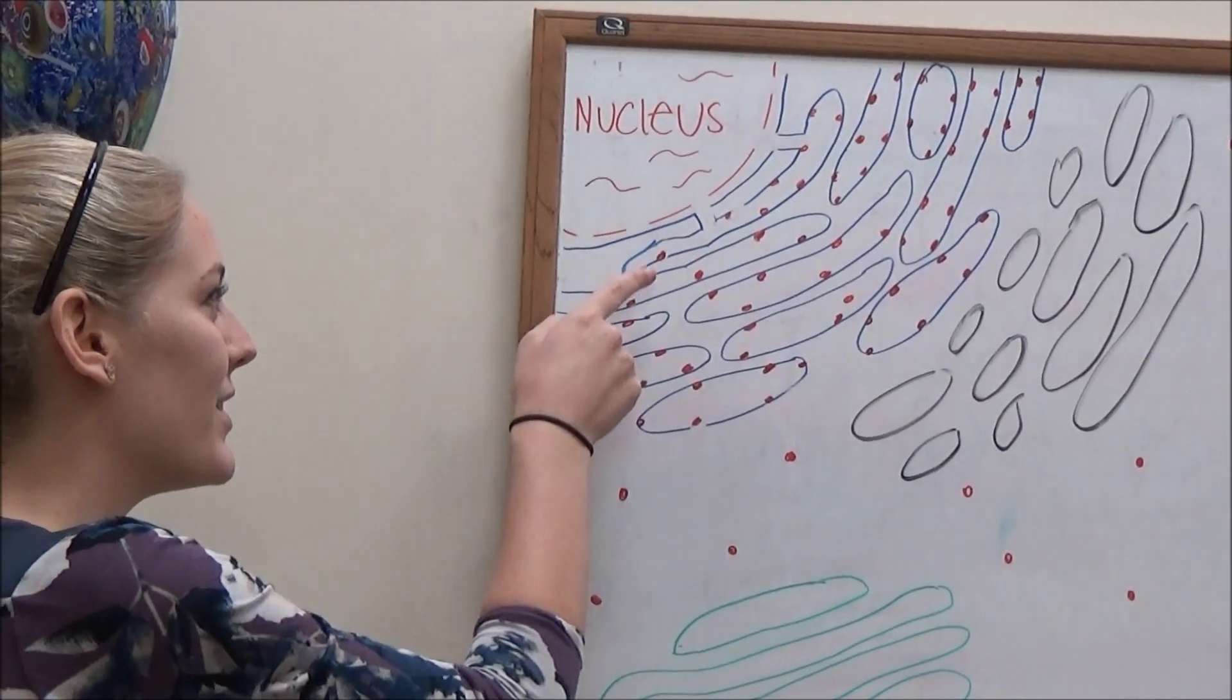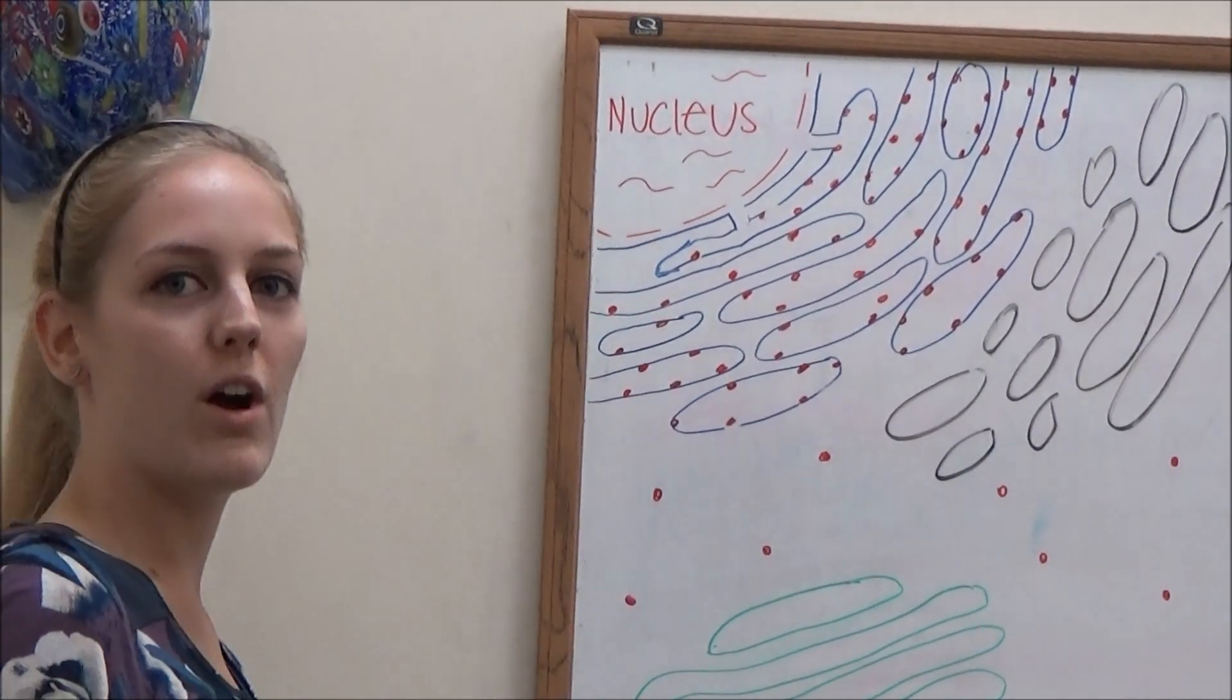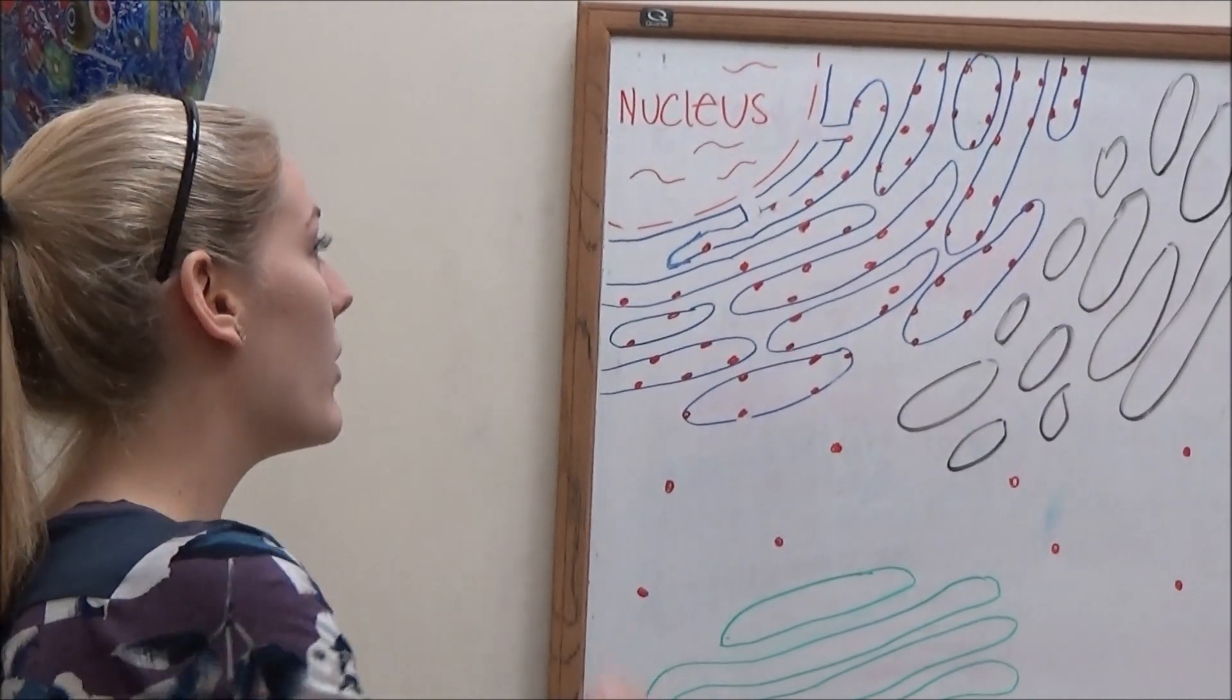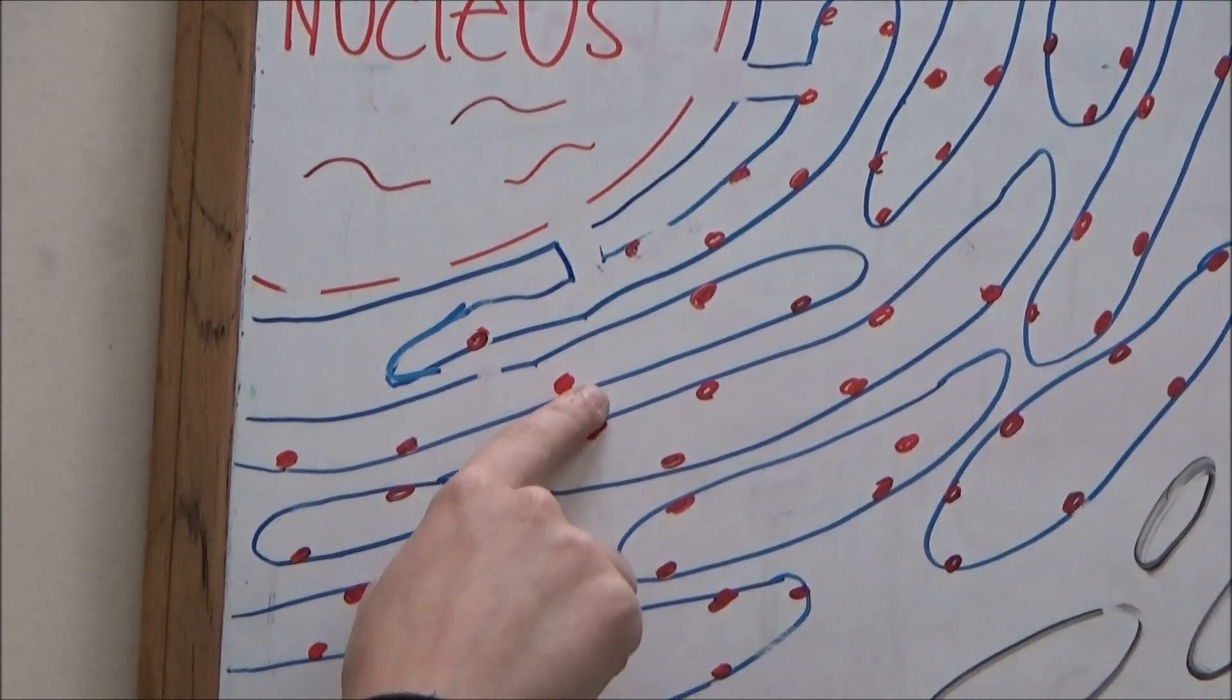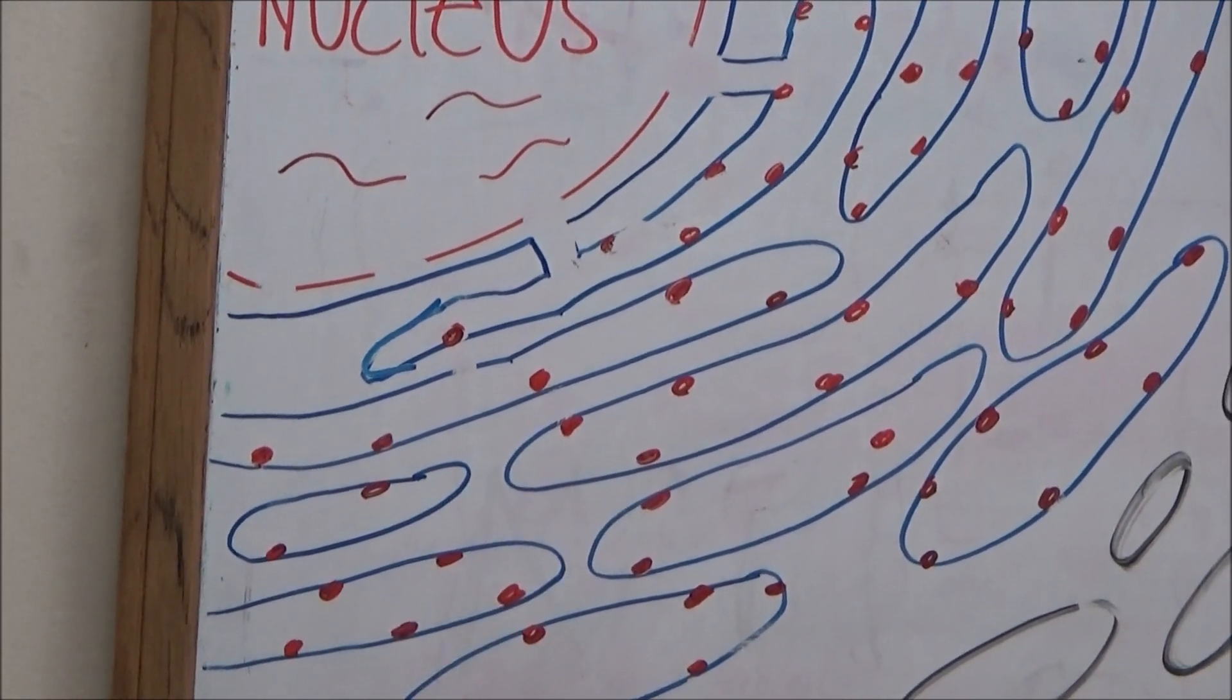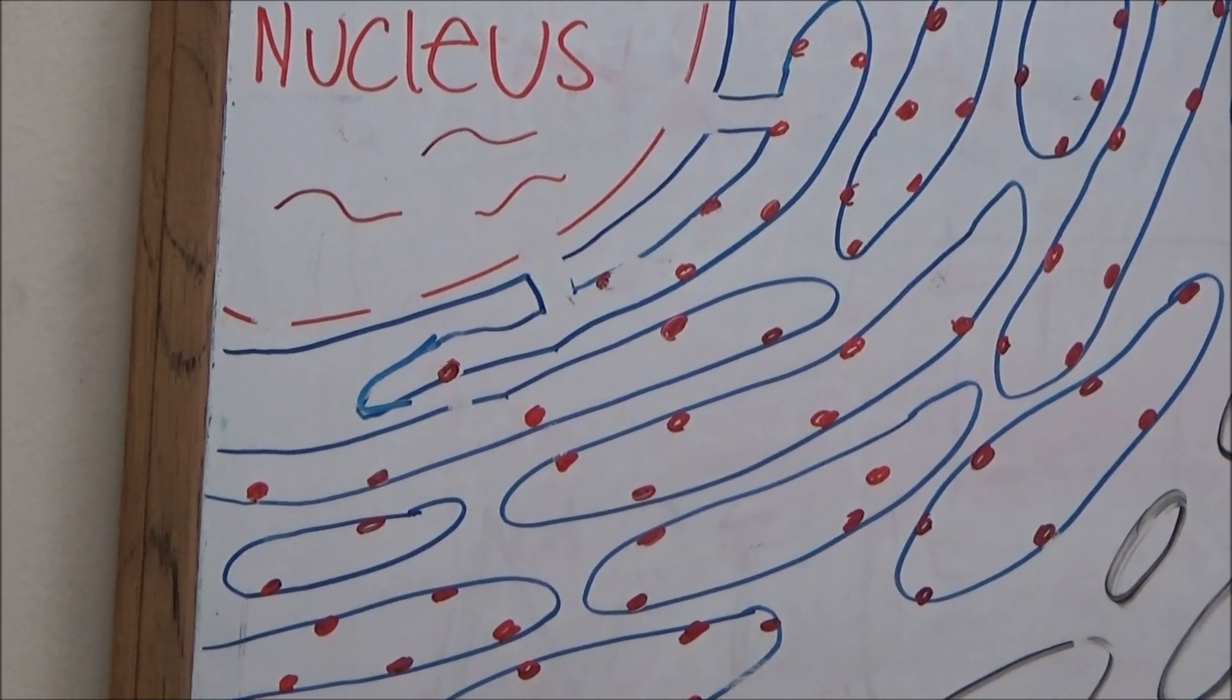So if it is attaching to one of these ribosomes that are on the rough ER, then the mRNA is going to attach to one of these that are on the membrane of the rough ER, and the protein is directly translated straight into the rough ER.